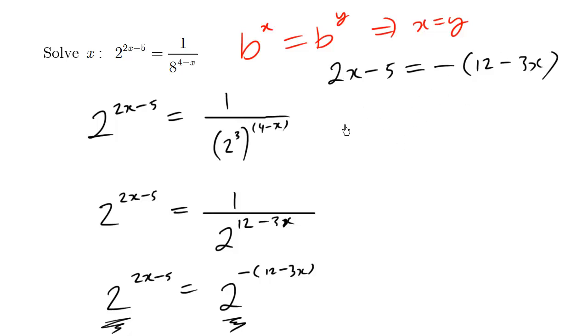So let's finish this off using basic algebra. We have 2x minus 5 equals, I'm just distributing this negative 1, negative 12 plus 3x. And we're just going to move this 2x over.